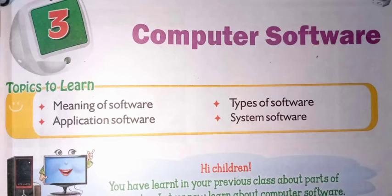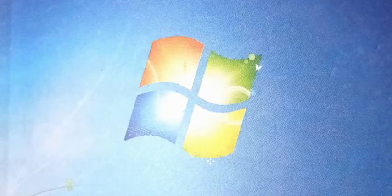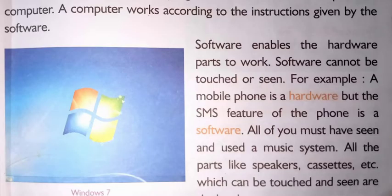In the first point — meaning of software. In the second chapter you learned about hardware. Hardware means the parts of a computer that can be touched or seen, for example monitor, mouse, keyboard, etc. Software means the parts which we cannot touch, for example Windows 7, Windows 8, etc. Software refers to the set of programs which are used to operate a computer. A computer works according to the instructions given by the software.